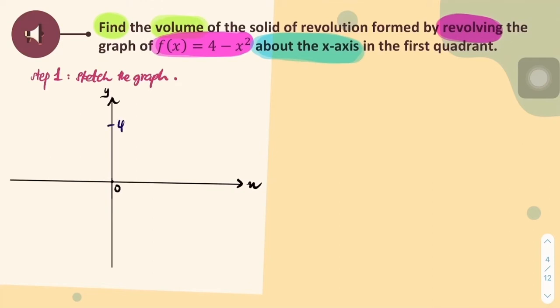What we have here is a negative quadratic. Don't forget to label y equals 4 minus x squared. And now, it is said that the region is in the first quadrant only. Therefore, I shade the region.